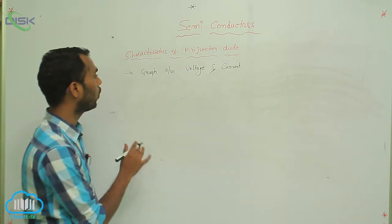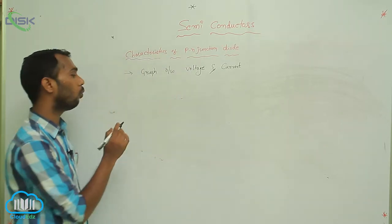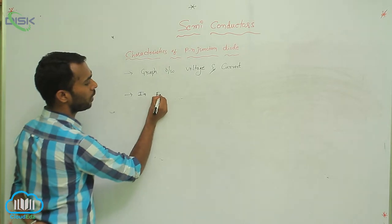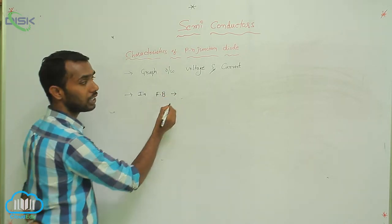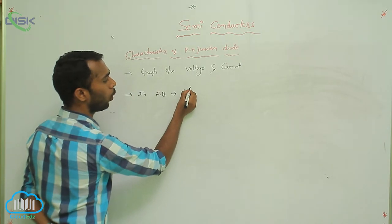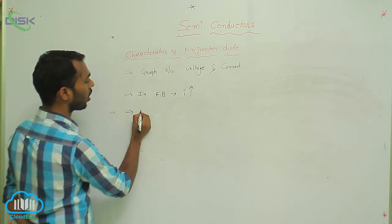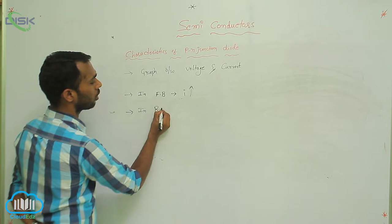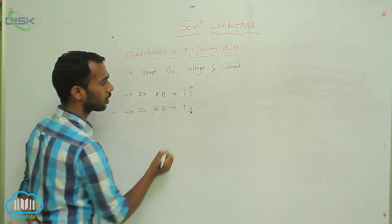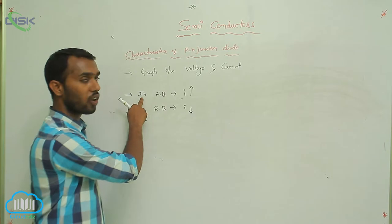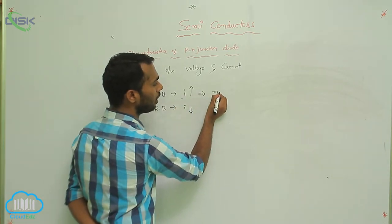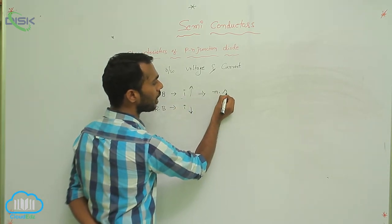Before checking the graph, you have to know: in forward bias, current is more. In reverse bias, current is less. Current is more in forward bias.